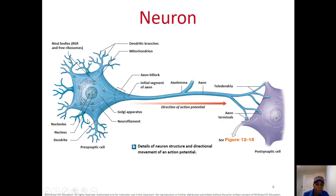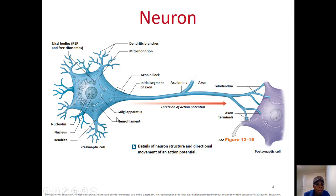Here you can see the cell body with lots of dendrites, the axon, and the terminal part of the axon. The beginning between the cell body and the axon is called the axon hillock, and right after that is the initial segment of the axon. You have all the organelles just like any cell — Golgi apparatus, mitochondria, neurofilaments, nucleus, and nucleolus.